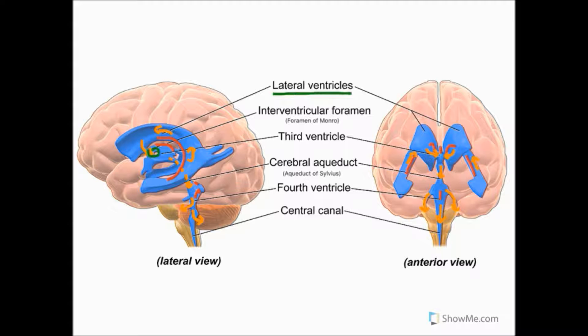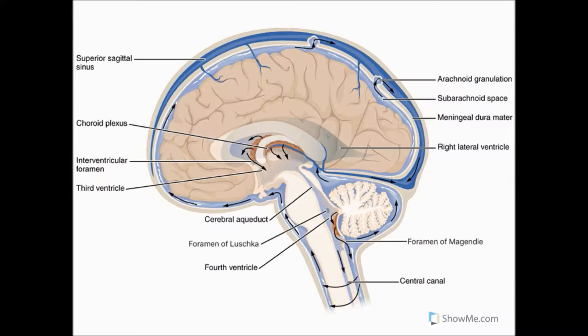From here, CSF can pass into the central canal of the spinal cord or via three small foramina it can flow into cisterns of the subarachnoid space. These three small foramina include a single central foramen of Magendie, which can be found here, and also two lateral foramina of Luschka, which can be found here.